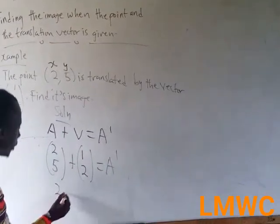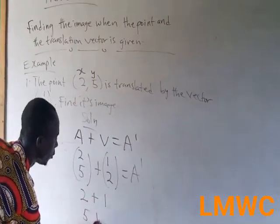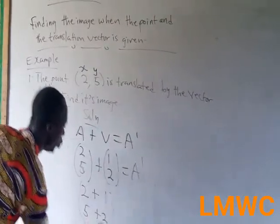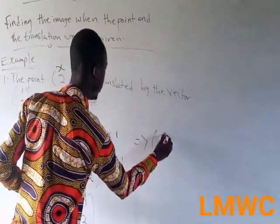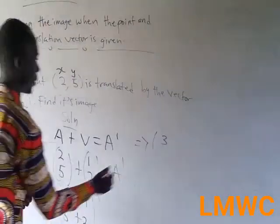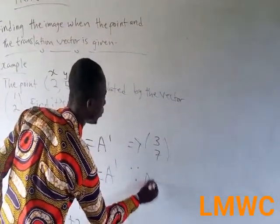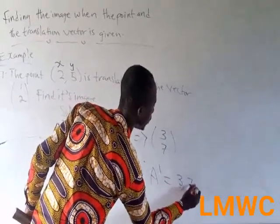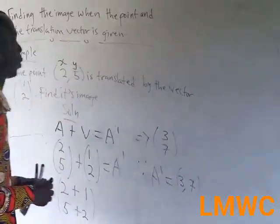You add the numbers at the top. It becomes 2 plus 1 and 5 plus 2. So 2 plus 1 is 3, and 5 plus 2 is 7. Therefore, A prime is equal to (3, 7). You leave your answer in coordinates.